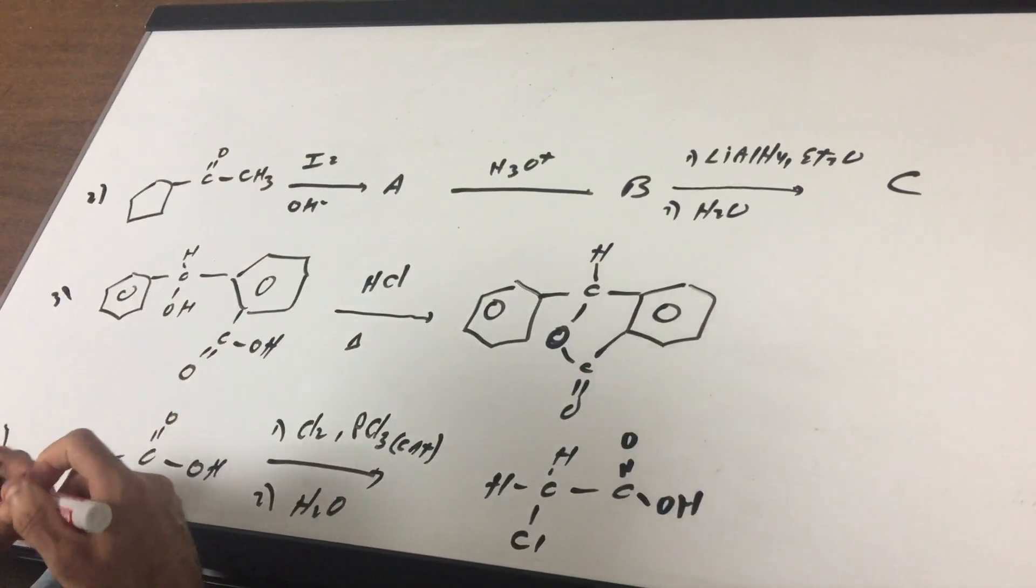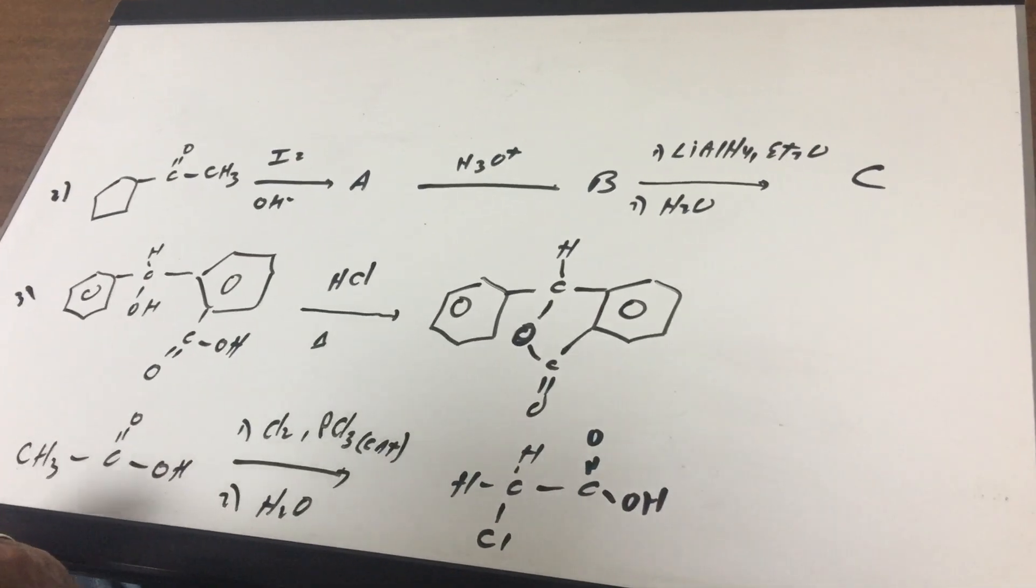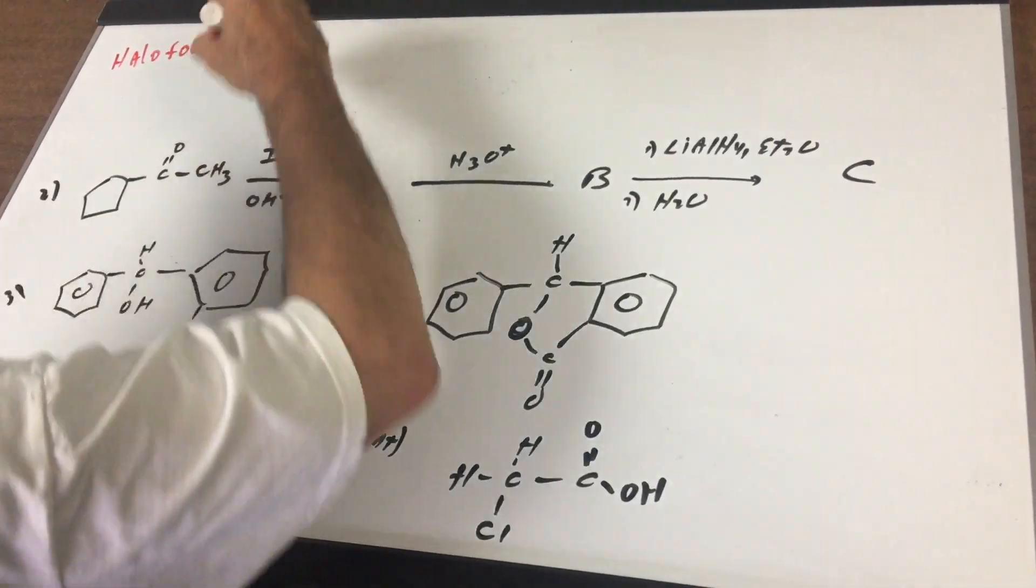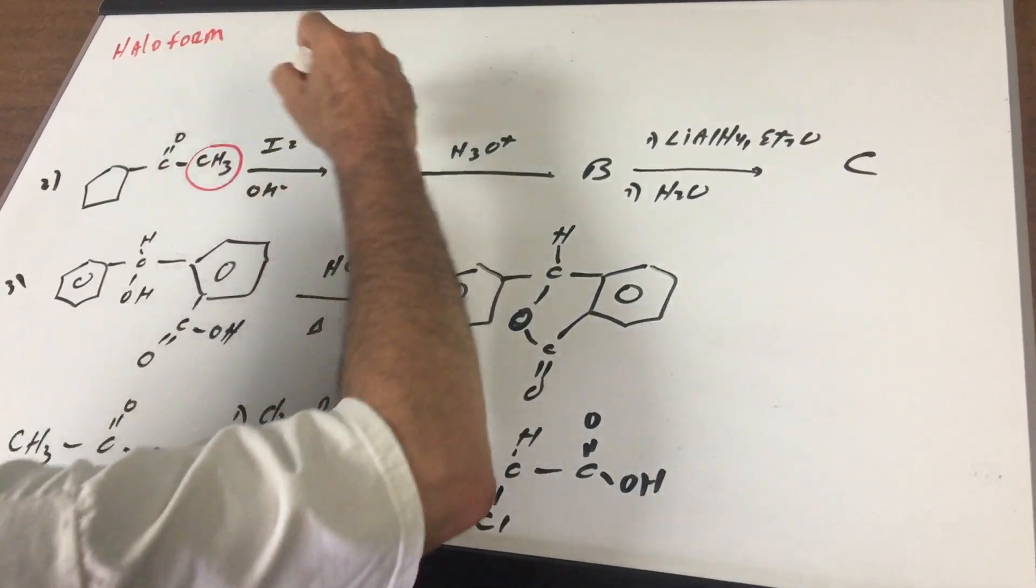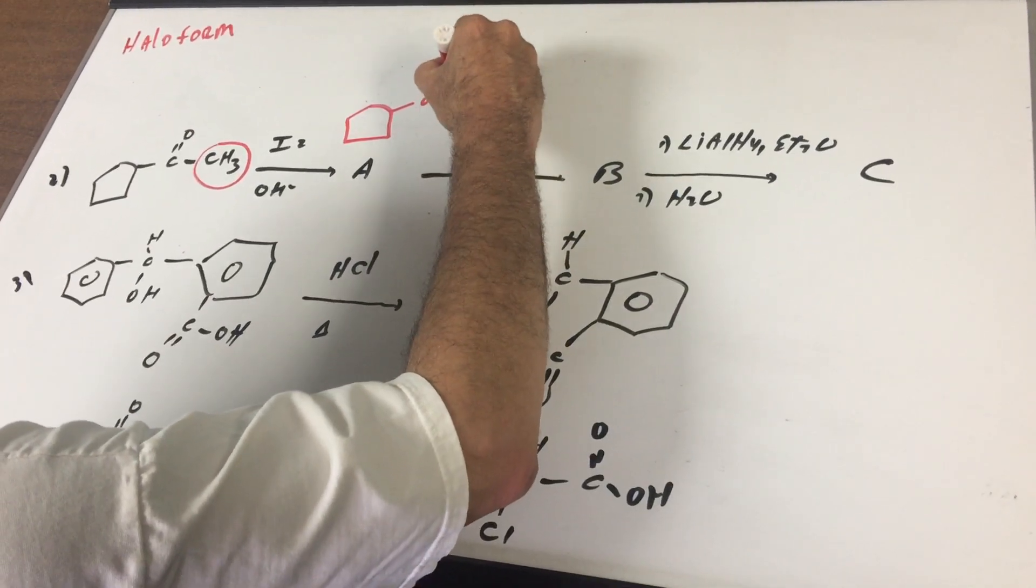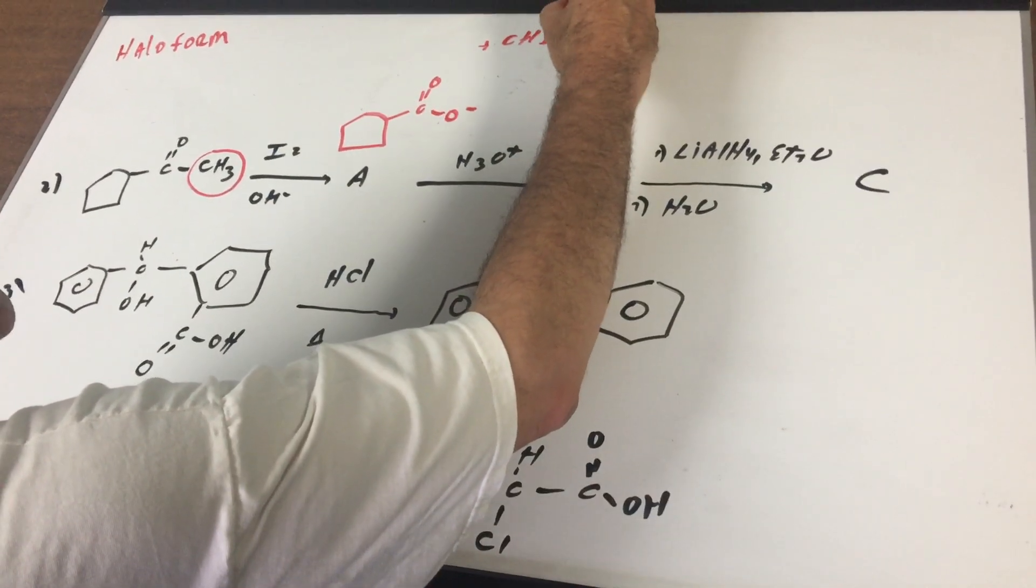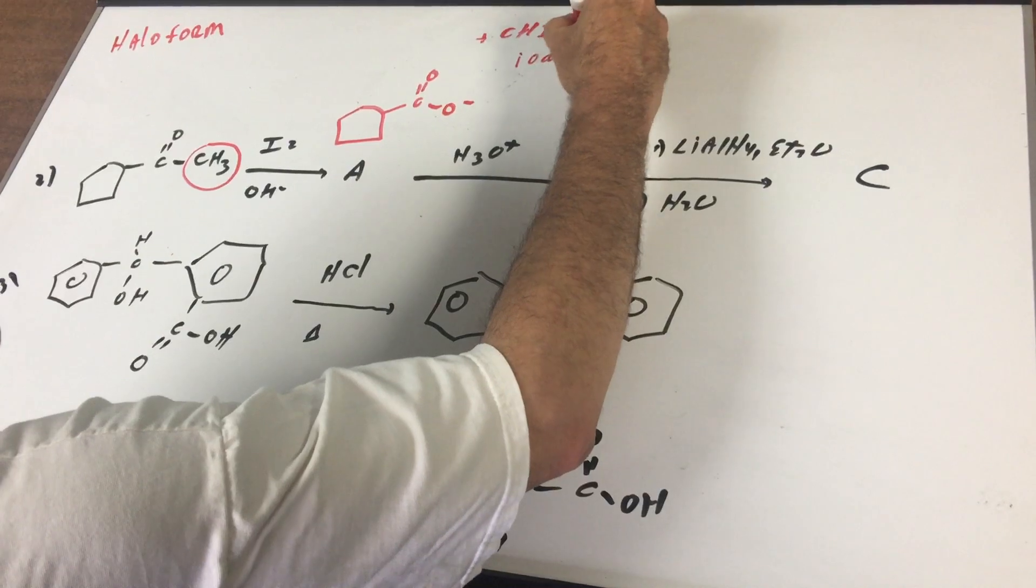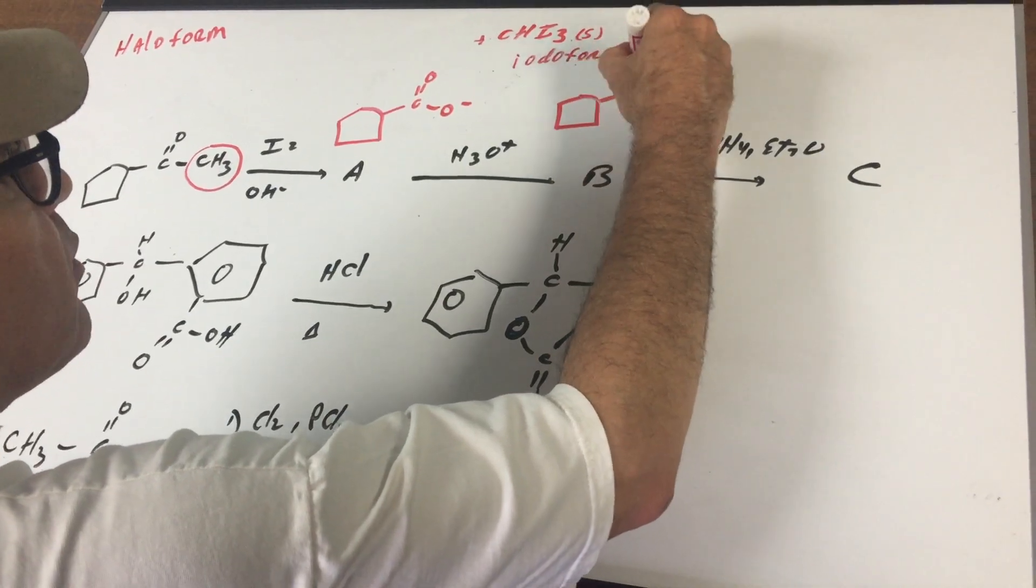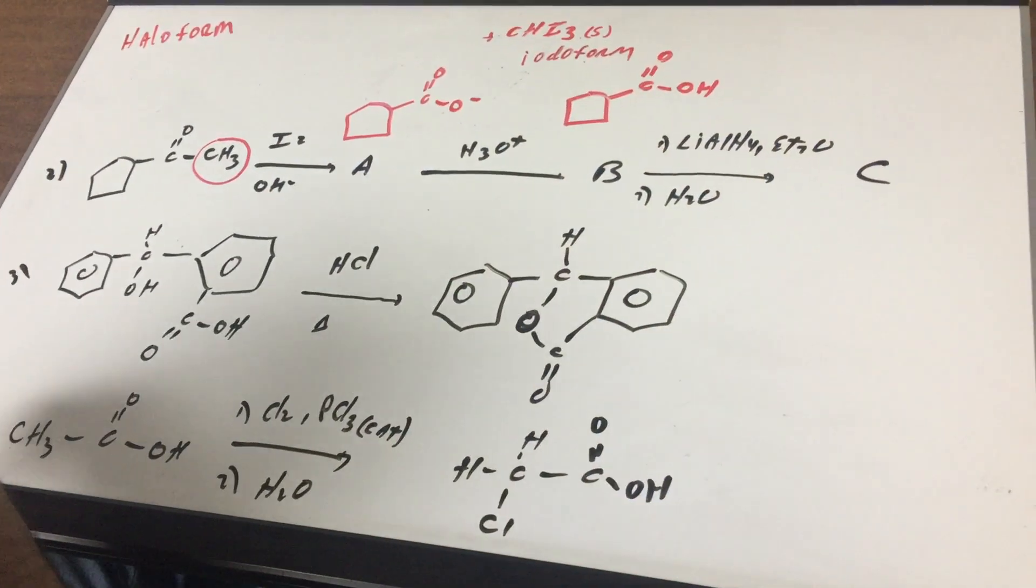Now you have iodine in base on a methyl ketone. I hope you remembered in the Destroyer I have a lot of these questions—this is called the haliform reaction. In one of my other tapes I did a nice video on this on the mechanism. You take off this and that would give me this. So you've knocked off a methyl and then the byproduct, if you remembered, would be the yellow iodoform. All right, once you got this you then acidify it and then that would give me my cyclopentane carboxylic acid.